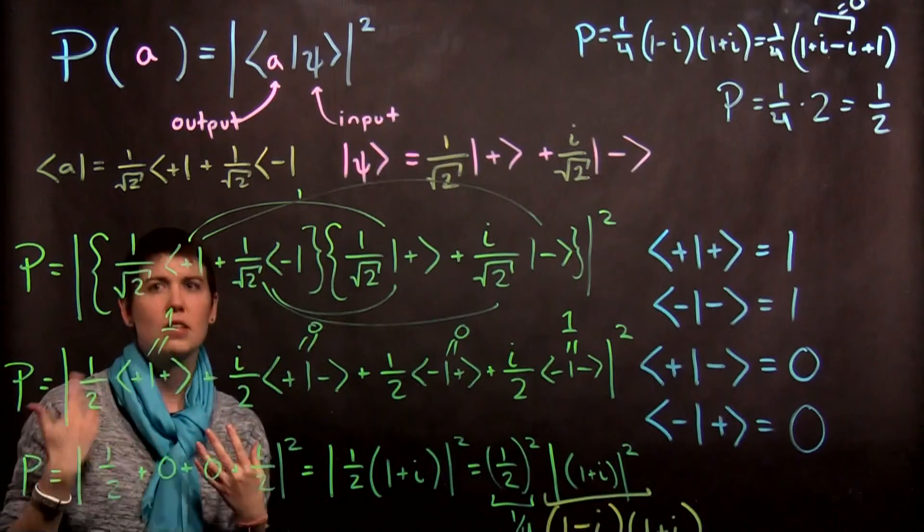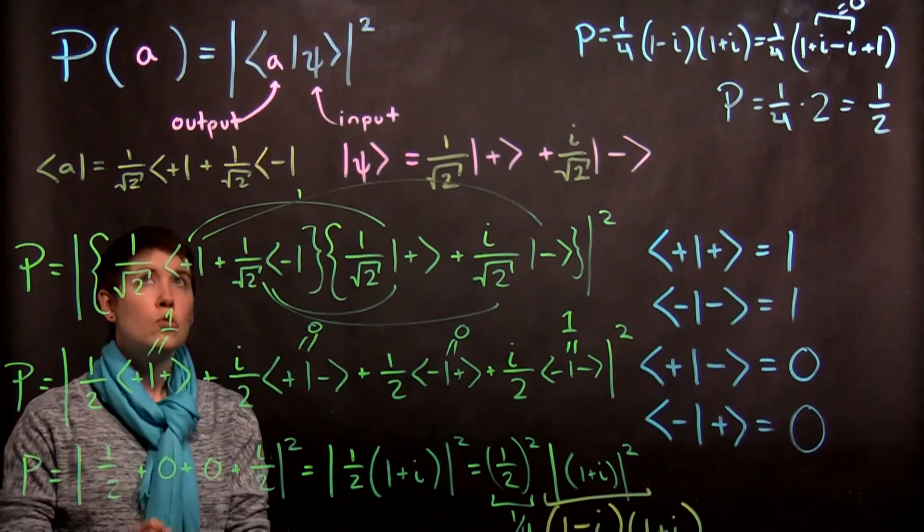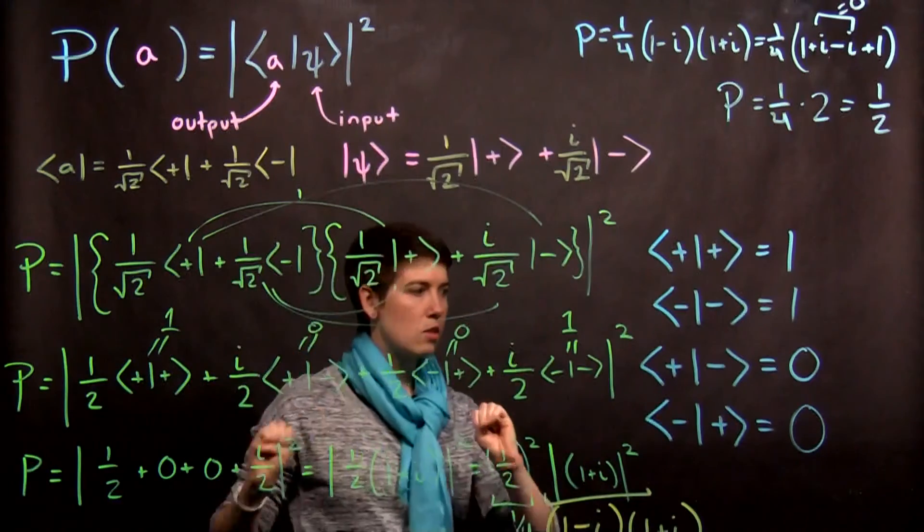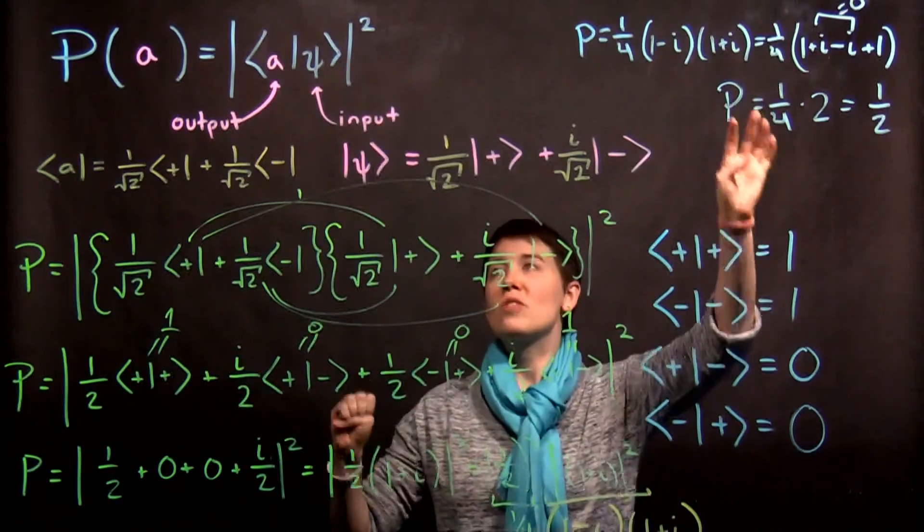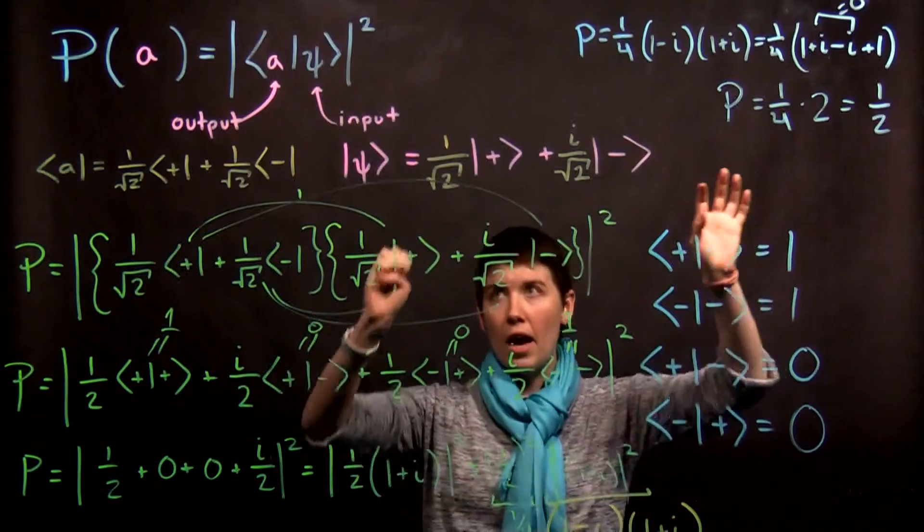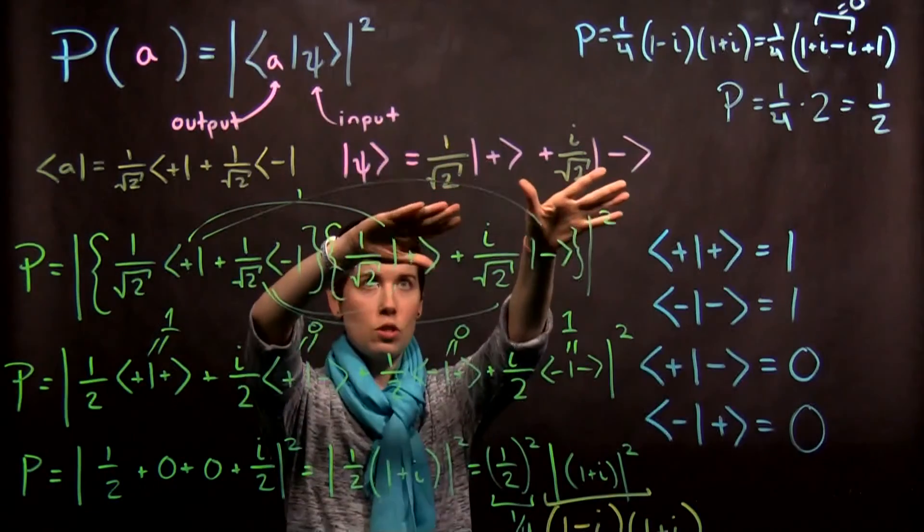So what we've done here, to come back to the beginning, is we've found that there's a 50% probability that when we start with this initial state, we would measure this final state.